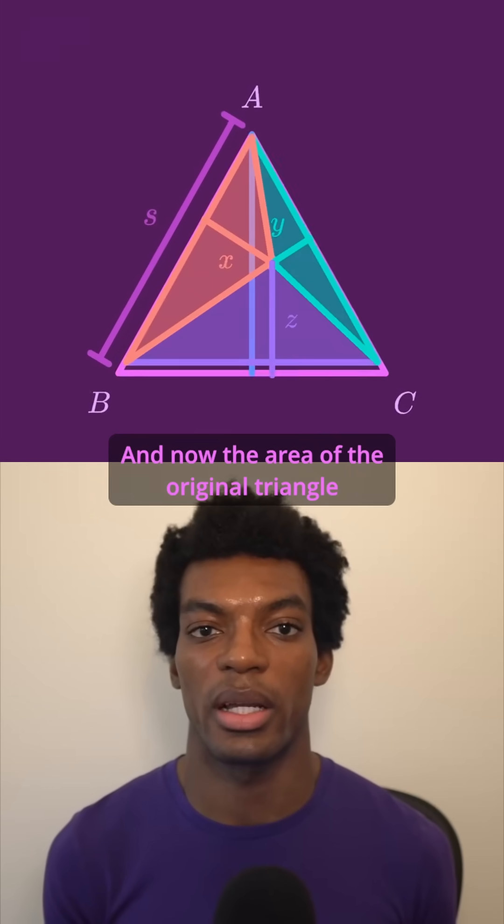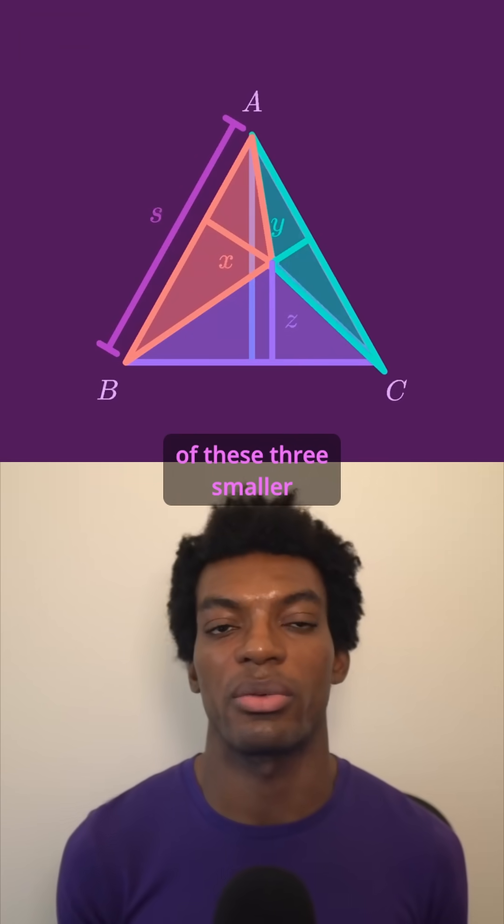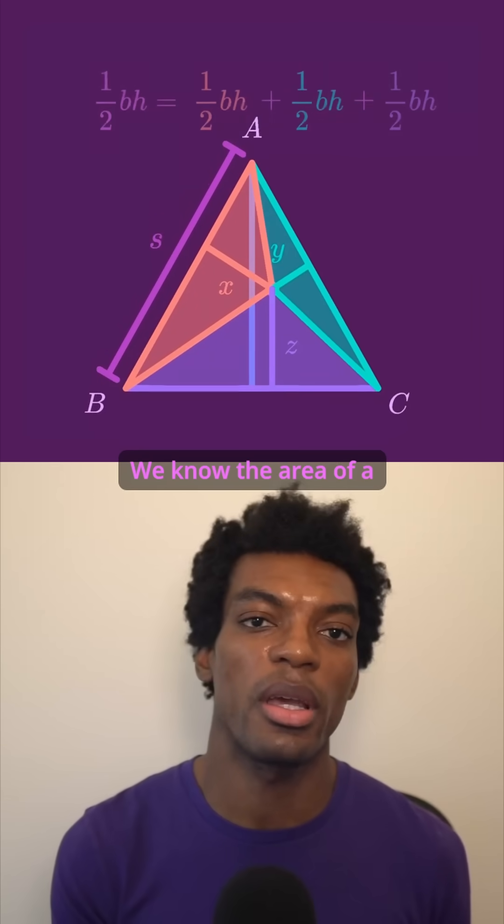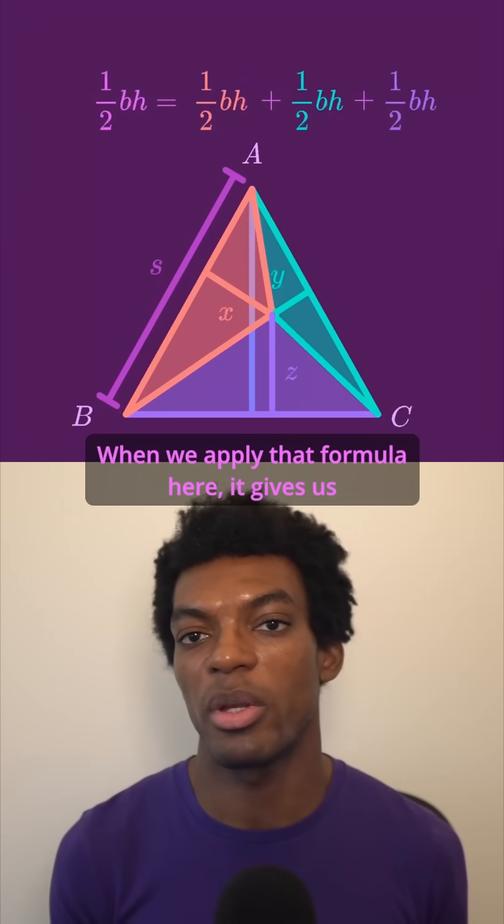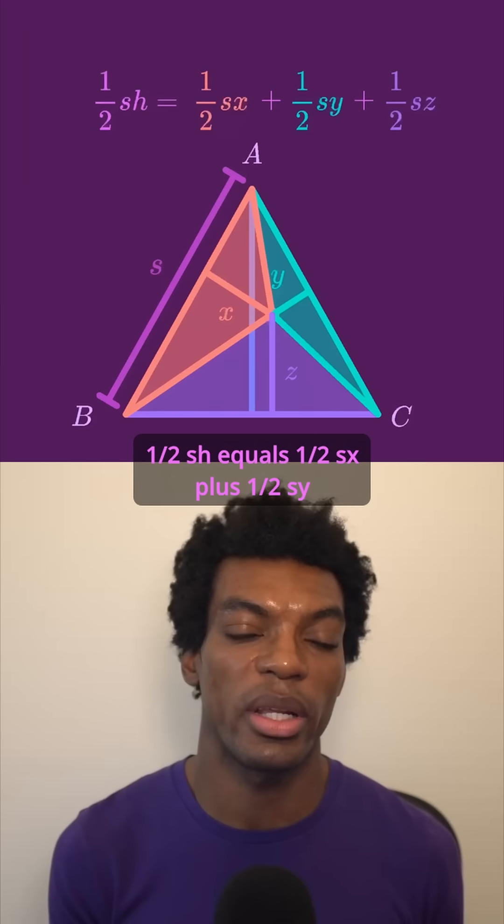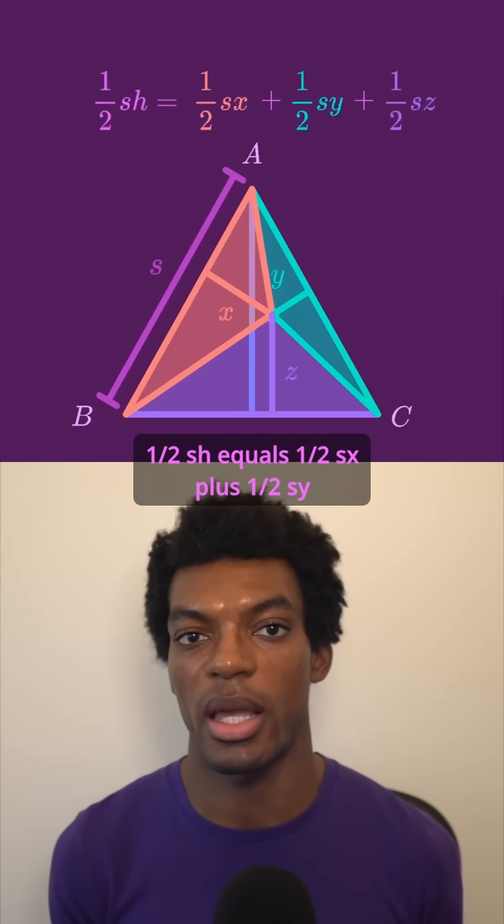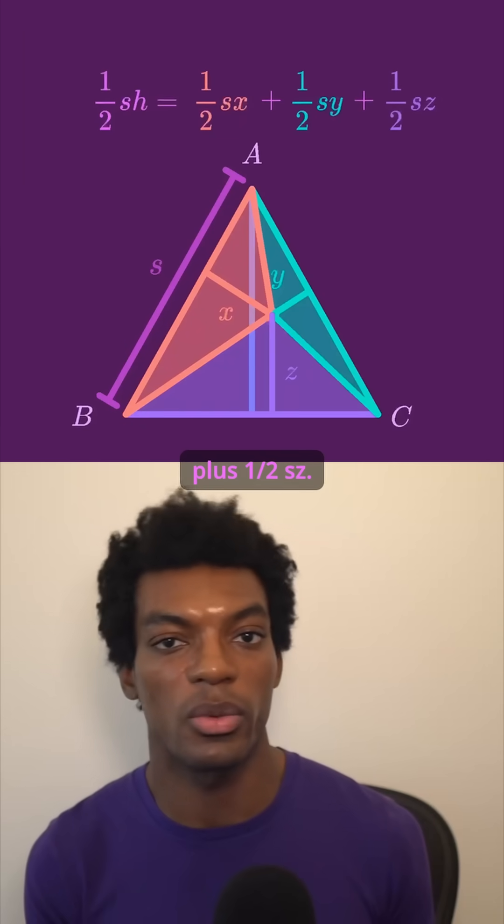And now the area of the original triangle is the sum of the areas of these three smaller triangles. We know the area of a triangle is 1 half BH. When we apply that formula here, it gives us 1 half SH equals 1 half SX plus 1 half SY plus 1 half SZ.